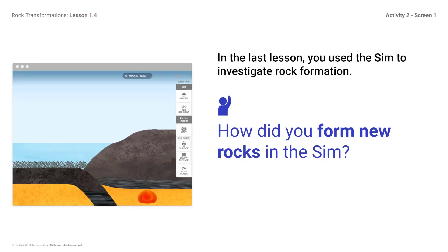In the last lesson, you used the sim to investigate rock formation. How did you form new rocks in the sim? You might respond: I pressed melt to form new rock — this created a volcano at the surface. Or, I pressed weather to form new rock, and rock pieces then moved into and were buried in the ocean.